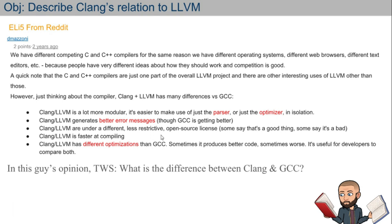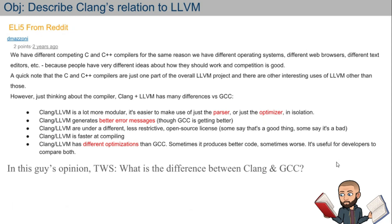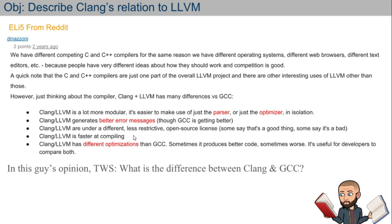Clang is under a less restrictive license, though that argument doesn't fly with me — because Clang/LLVM are allowed to hide the versions or alterations they make, and if you improve something, you should let the rest of us know how you improved it so we can all enjoy it. Clang can be faster at compiling as in the Carbon Libraries example, but not necessarily in all other examples.